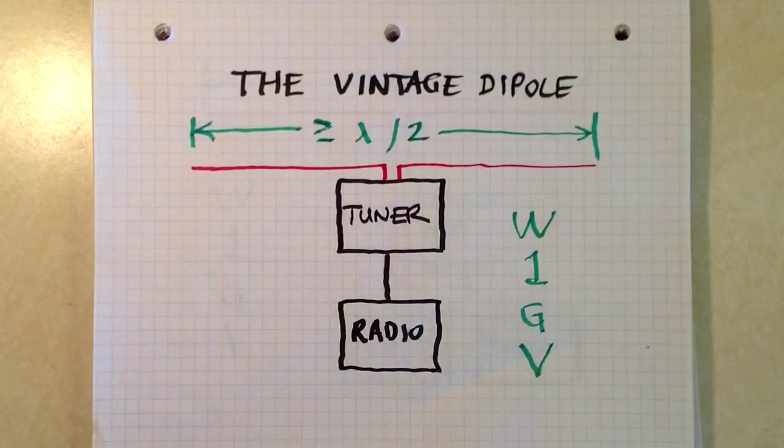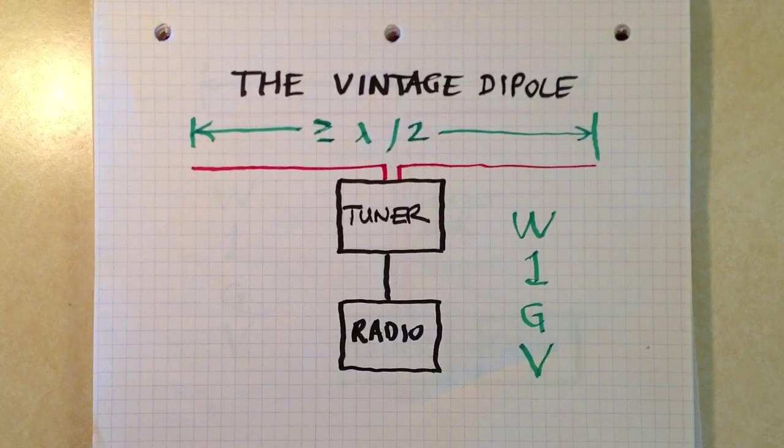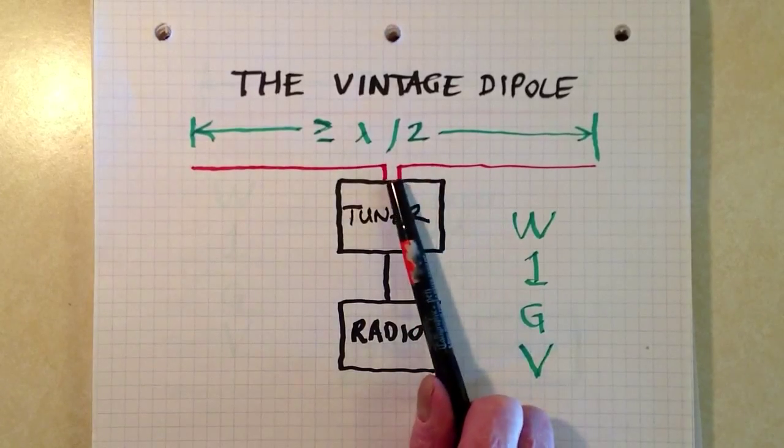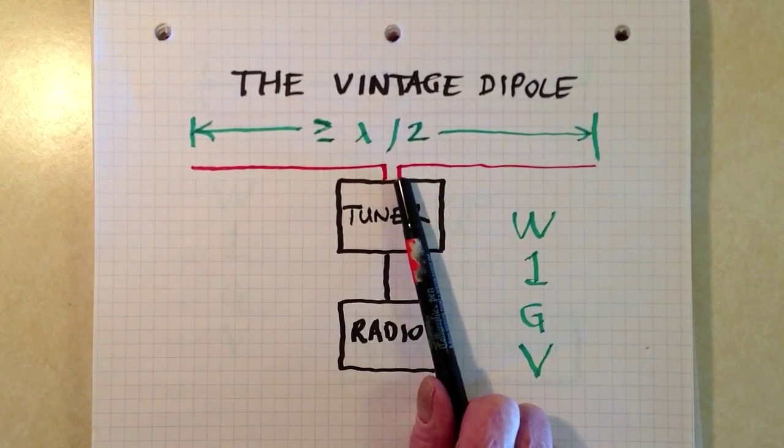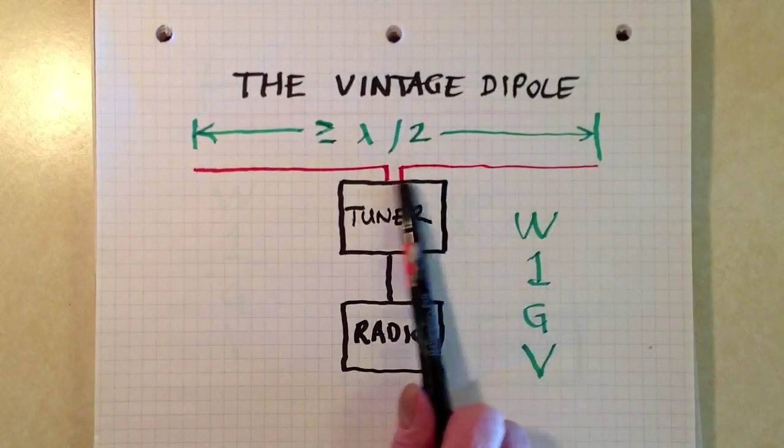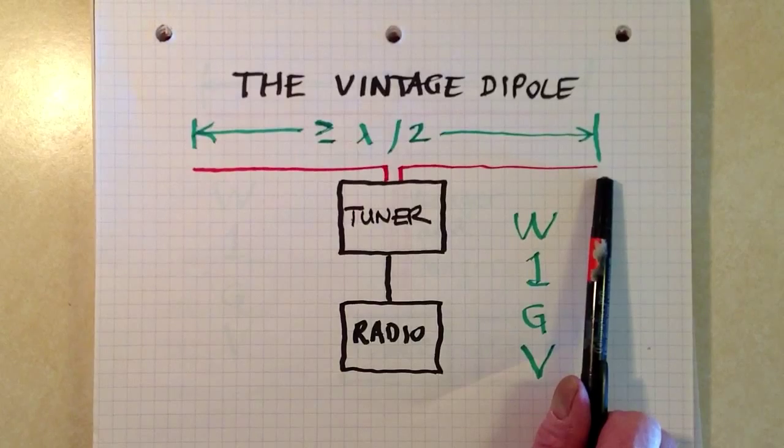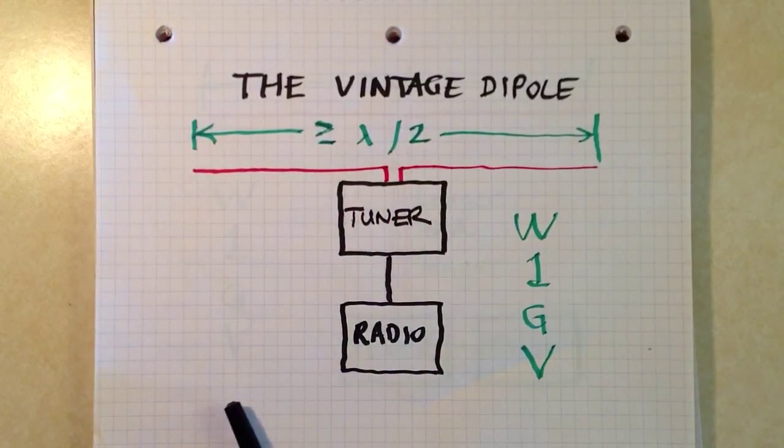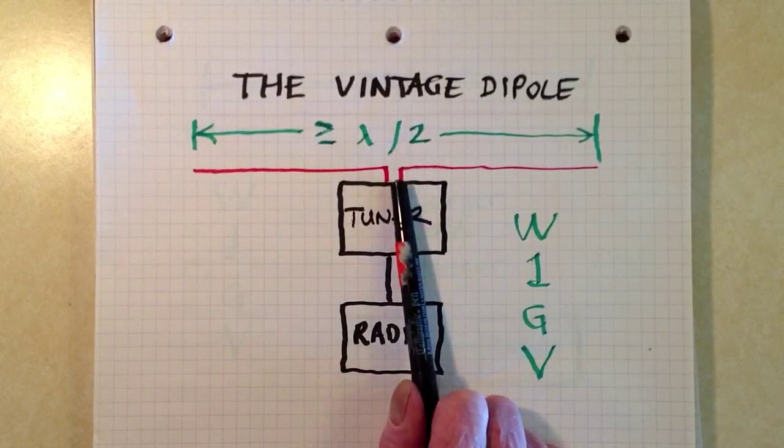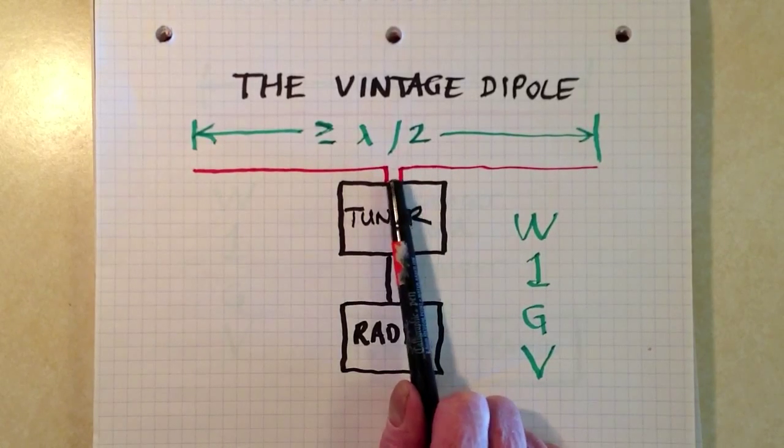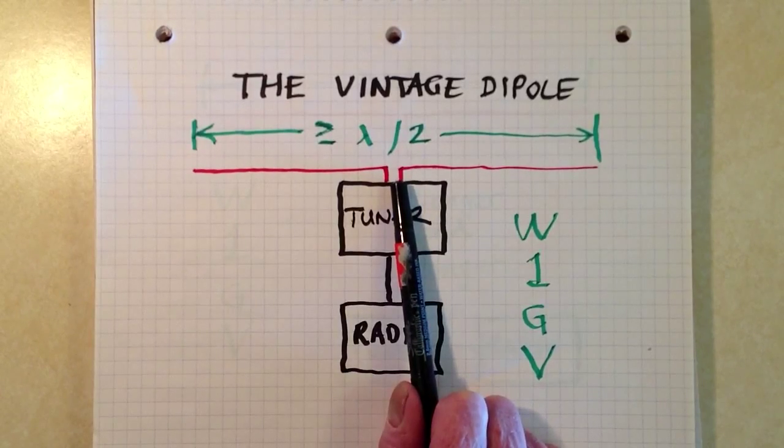And this is how it evolves. I'm going to show you just a couple of diagrams here as to how it evolves. Imagine that you have your radio, your transceiver, an antenna tuner, and then you connect that tuner to a pair of wires, both equally long, such that the total span of wire is at least a half a wavelength. You don't really have any transmission line here. This tuner is right at the antenna feed point.